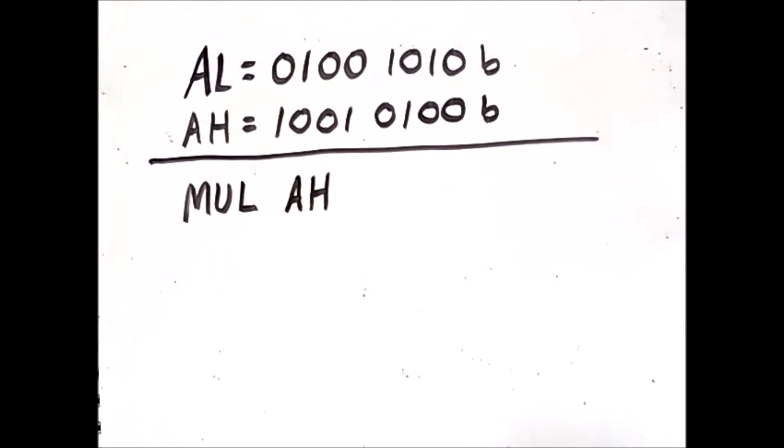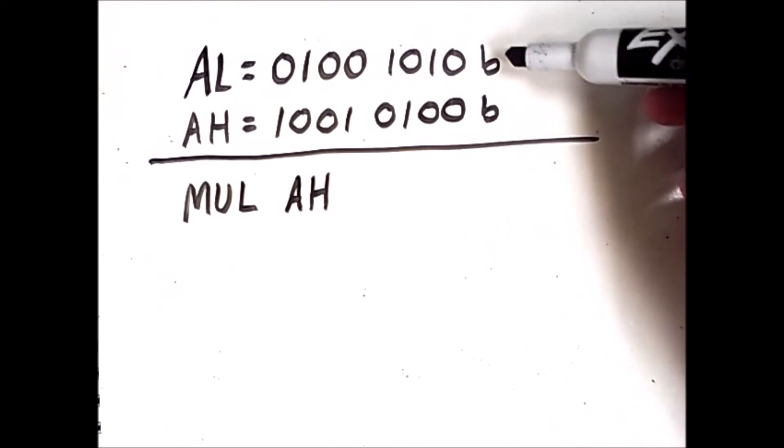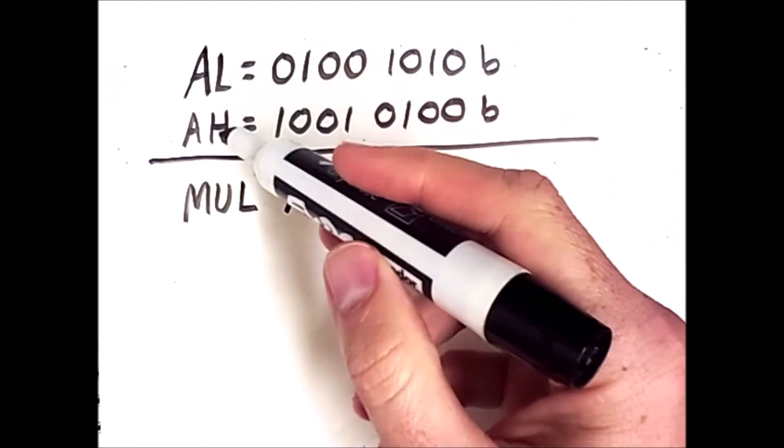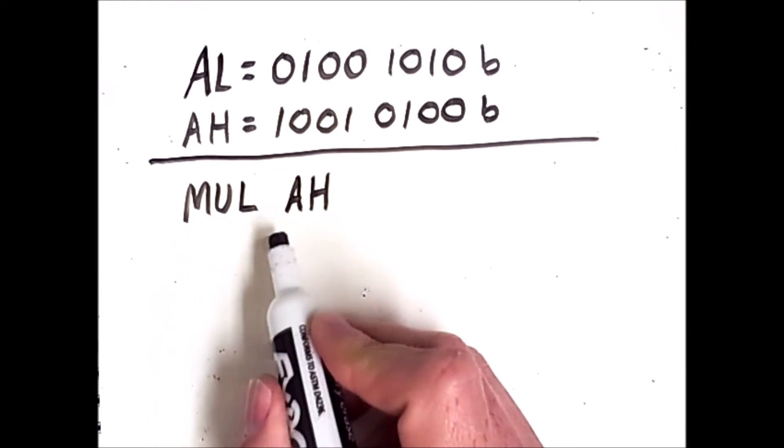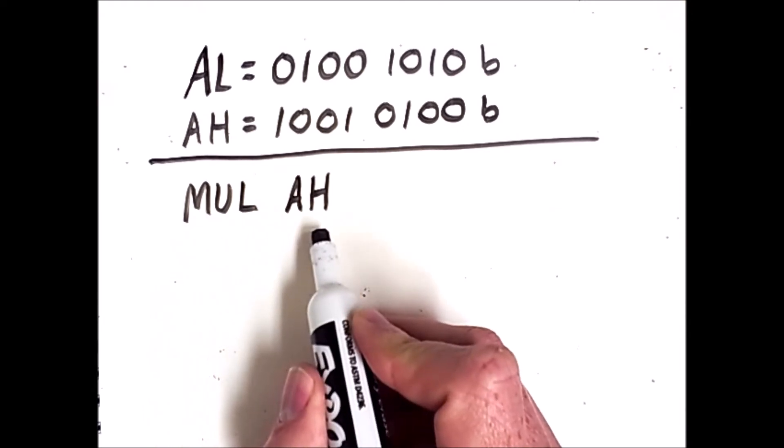Here is a tricky example where interpreting the operand values the right way really matters. We will start with these same bit strings in AL and AH, which are two registers. There is a command in x86 assembly language called multiply, or MUL, which takes a single operand.